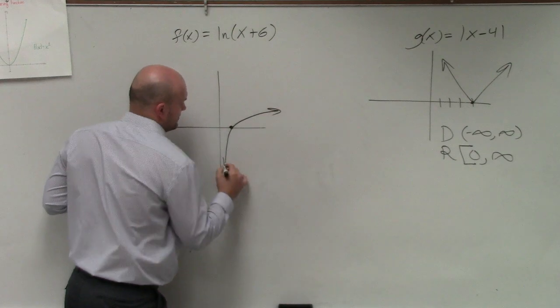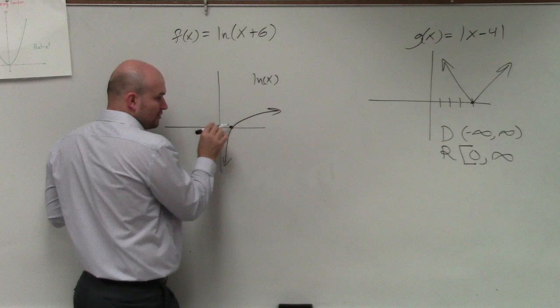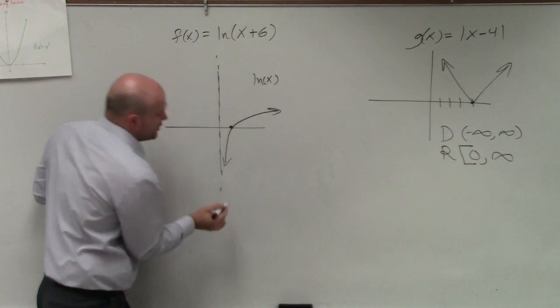The parent graph, ln(x), looks like this. It crosses at (1,0) and it approaches a vertical asymptote.